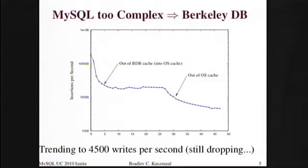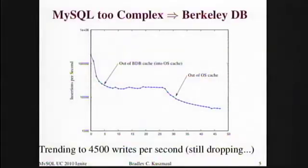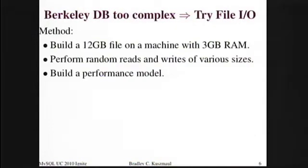MySQL was too complicated, so the next experiment to simplify things was to measure Berkeley DB. I saw this sort of hockey curve performance, except that there were two steps on it: the first where Berkeley DB fell out of cache, and the second where it fell out of main memory. That was too complicated, so I moved to file I/Os. I built a 12 gigabyte file on a machine that had 3 gigs of RAM and performed random reads and writes, then tried to make a performance model for that system.